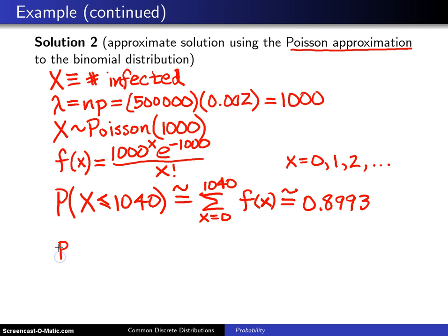So it does a pretty good job approximating and the way this is calculated in R is you type in ppois and the two numbers you put in there are X which is 1,040 and then you put in your lambda value which is 1,000 and it will return the 0.8993.